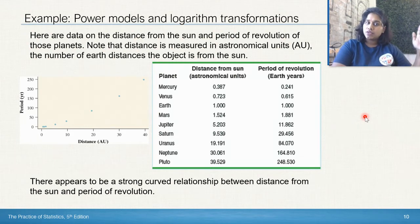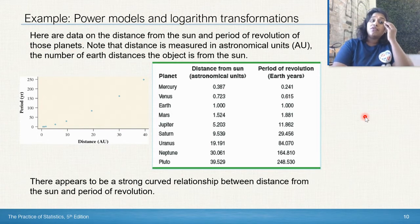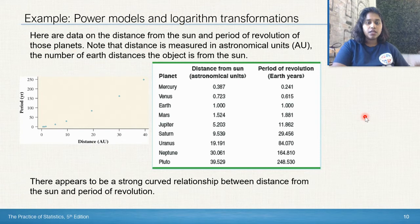Here are data on the distance from the sun and period of revolution of each of the planets in our known solar system as of 2005. Note that distance is measured in AUs, the number of Earth distances the object is from the sun. There appears to be a strong curve and we've got a couple plot points here. Very much, it's a curved relationship.